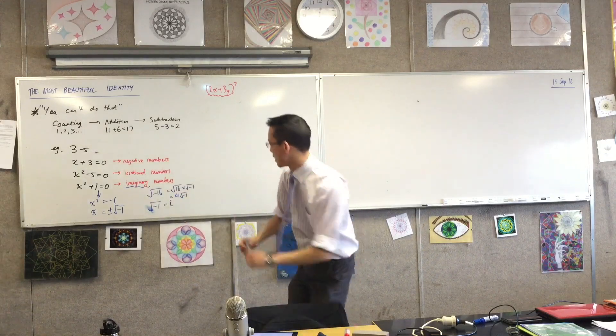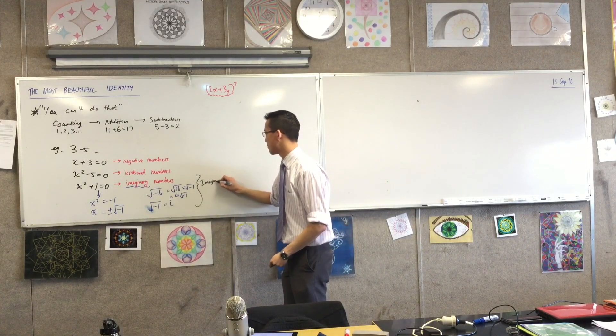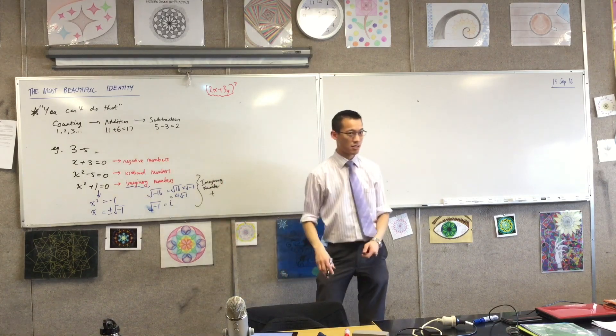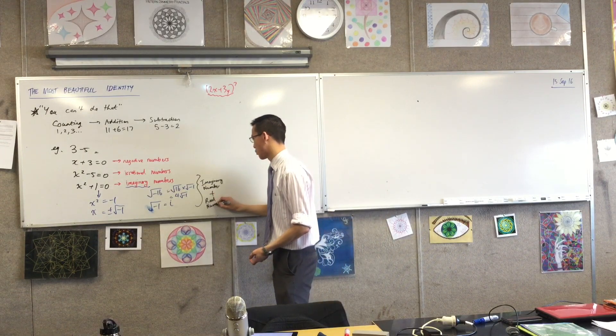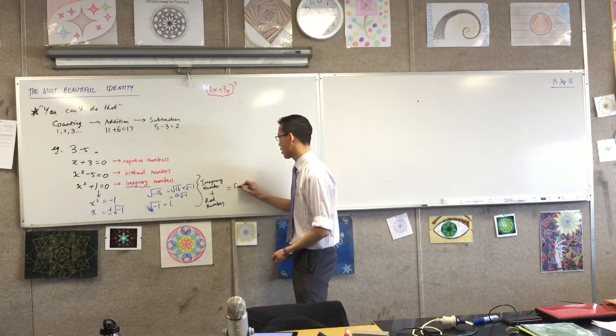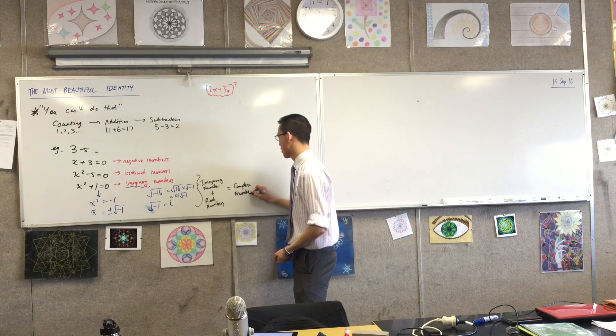So if you put together an imaginary number with a normal number that you think of - real numbers - we call them complex numbers, because it's more complicated. There's more facets to it than all of these simple numbers here. So probably worth writing down: if you take an imaginary number and then you add it to a real number - these are all the numbers that you've been dealing with before - then we call that a complex number.